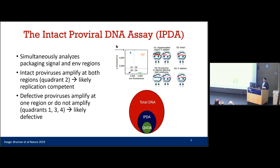The intact proviral DNA assay, or IPDA, was developed with the limitations of existing assays in mind. It simultaneously analyzes through a PCR reaction both the 5' and 3' end of the DNA strand. As output, you get a four-quadrant plot in which dots in quadrant 2 are amplifying from both the 5' and 3' end — meaning they are likely intact and therefore more likely to be replication-competent. Dots in quadrants 1, 3, and 4 either have a 5' or 3' deletion or don't amplify at all, and these are likely defective. The IPDA more accurately measures the clinically relevant reservoir.